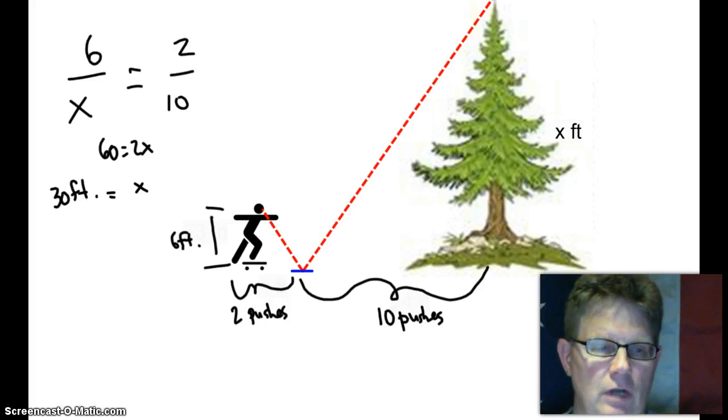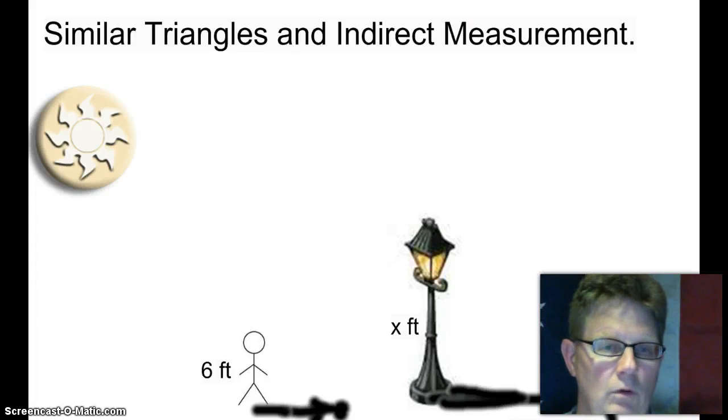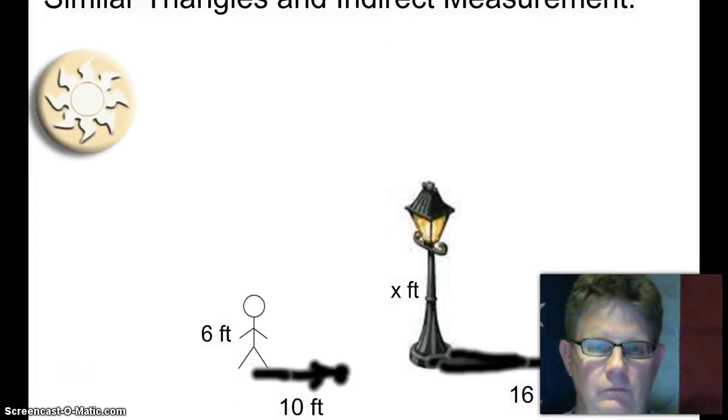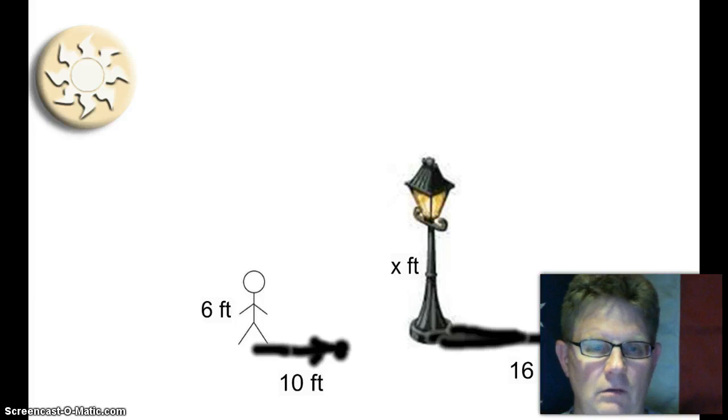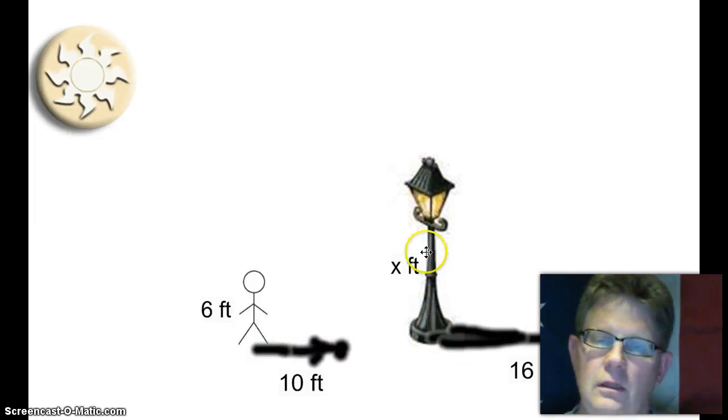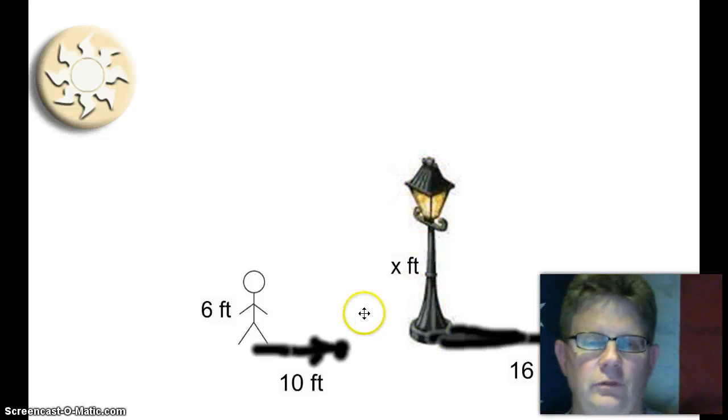Let's try another one. What we have here is the sun making a ten-foot shadow with a six-foot tall person and a sixteen-foot shadow on a lamppost. We're going to figure out how tall the lamppost is.